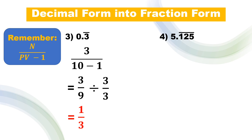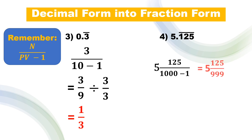Number 4: we have 5.125 repeating. We apply the formula: 5 and 125 over (1000 minus 1), which gives 5 and 125 over 999.